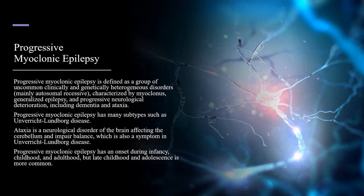Progressive myoclonic epilepsy is defined as a group of uncommon, clinically and genetically heterogeneous disorders characterized by myoclonus, generalized epilepsy, and progressive neurological deterioration including dementia and ataxia. Progressive myoclonic epilepsy has many subtypes, such as Unverricht-Lunberg disease. Ataxia is a neurological disorder of the brain affecting the cerebrum and causing impaired balance, which is also a symptom in Unverricht-Lunberg disease.